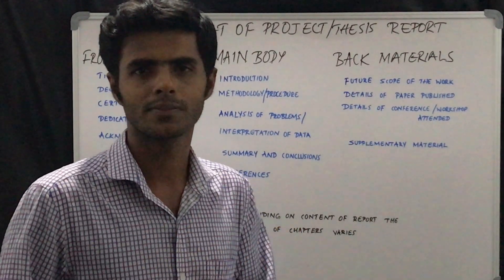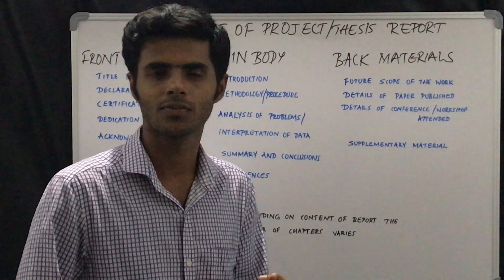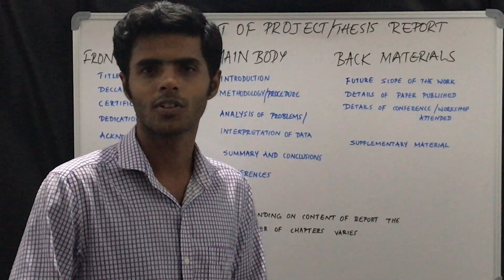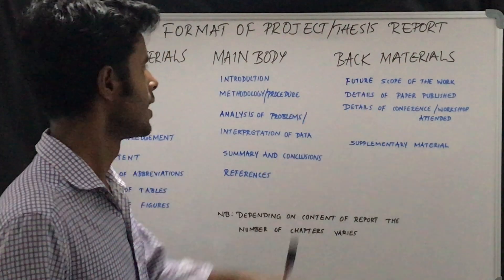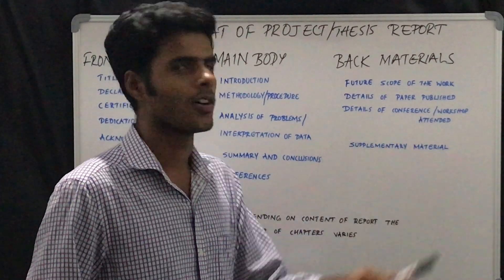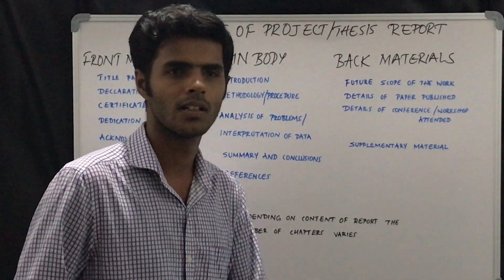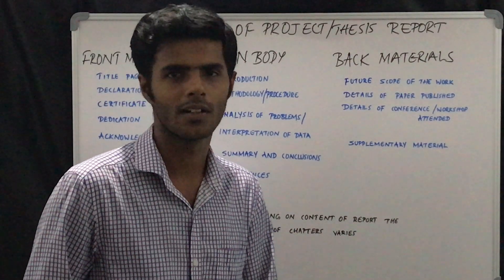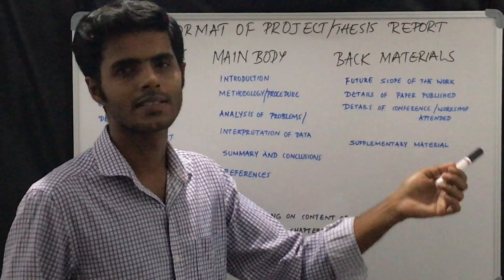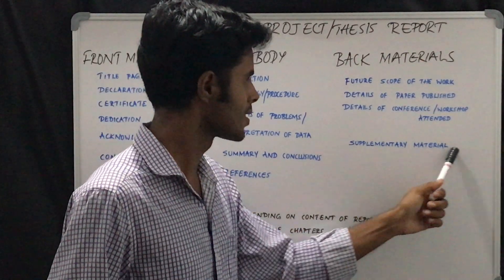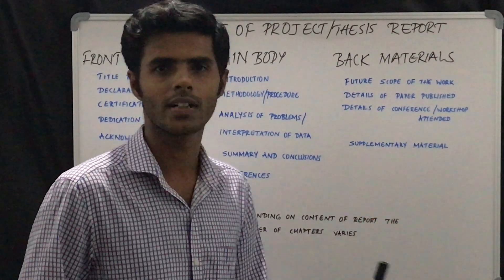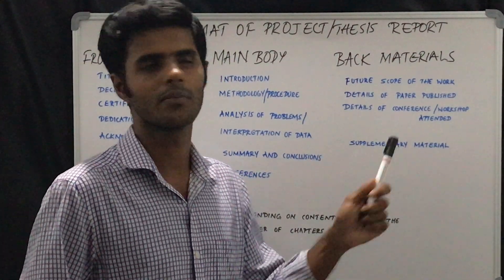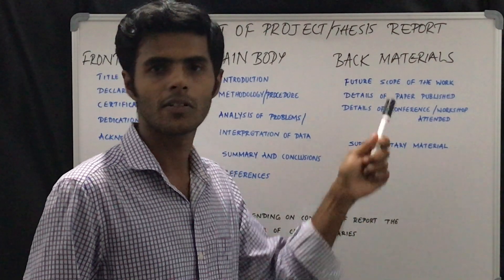You can mention the papers published, including the authors, title of the paper, the journal in which it is published, the year of publication, volume, and page number — everything can be mentioned in this section. Then comes the details of conferences or workshops attended, where you mention national or international level conferences or workshops. Additionally, any supplementary material that supports or provides evidence for your dissertation can also be attached to the back materials section.